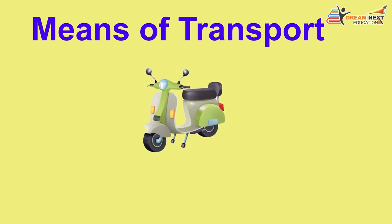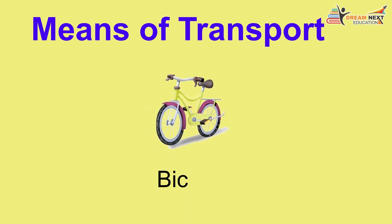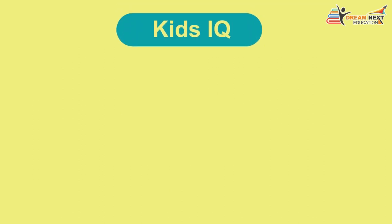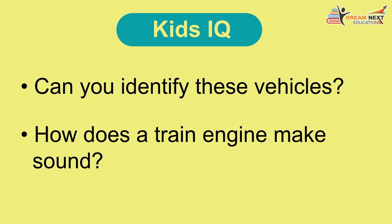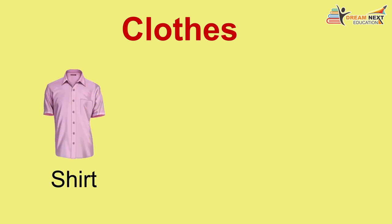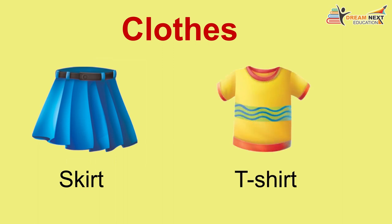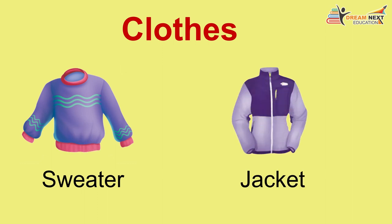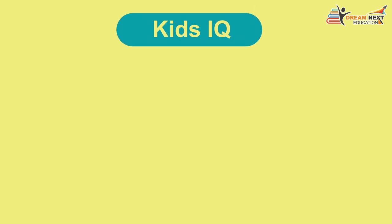Means of transport: 1. Aeroplane, 2. Tram, 3. Bus, 4. Horse cart, 5. Ship, 6. Auto rickshaw, 7. Scooter, 8. Car, 9. Bicycle, 10. Train. Kids IQ: Can you identify these vehicles? How does a train engine make sound?